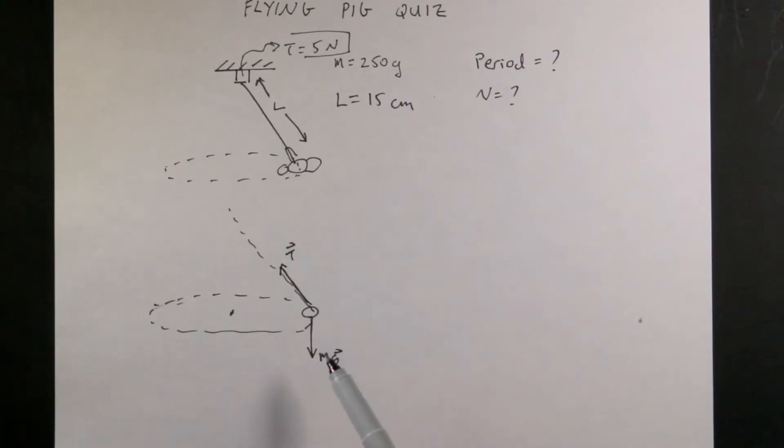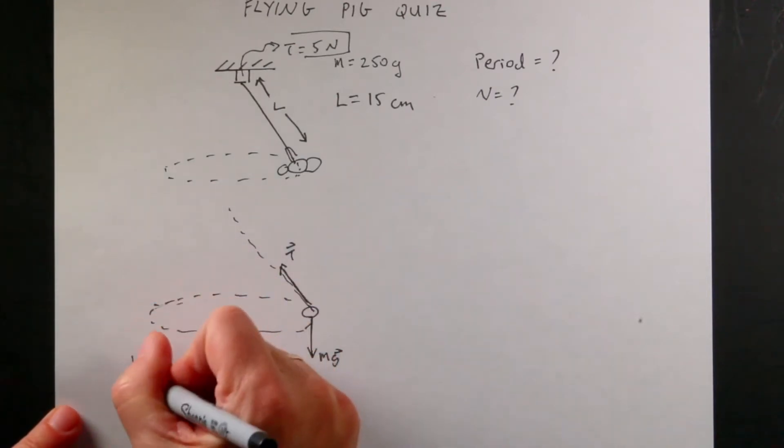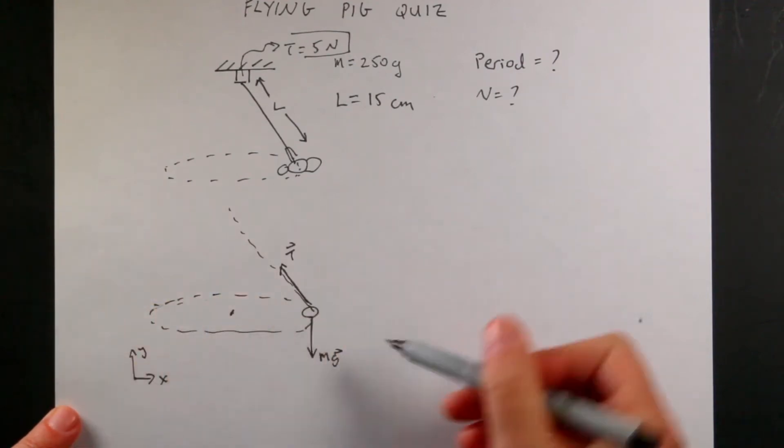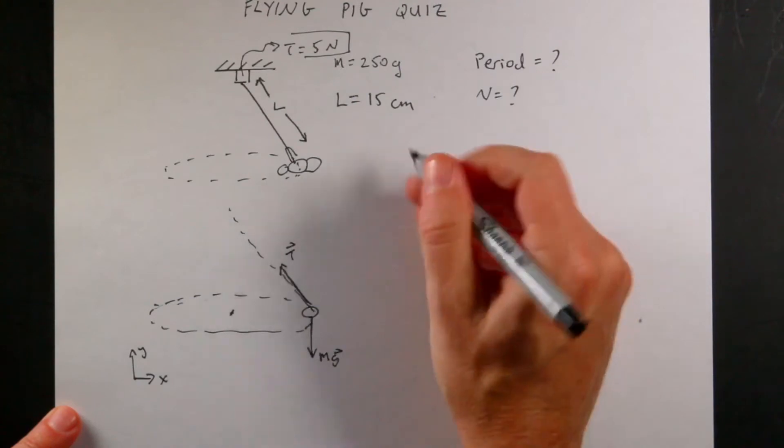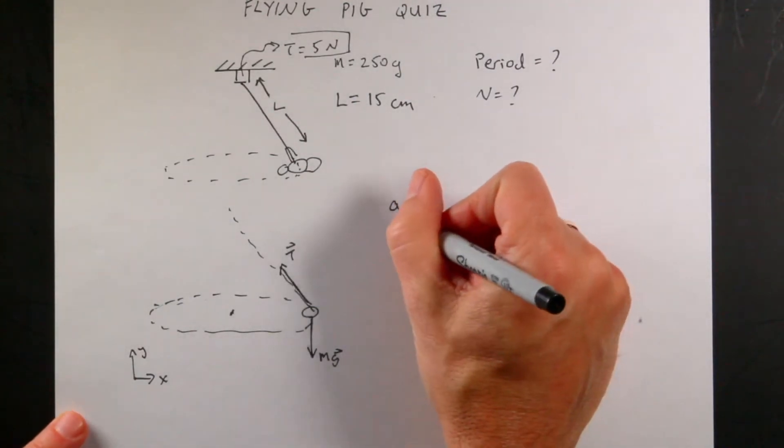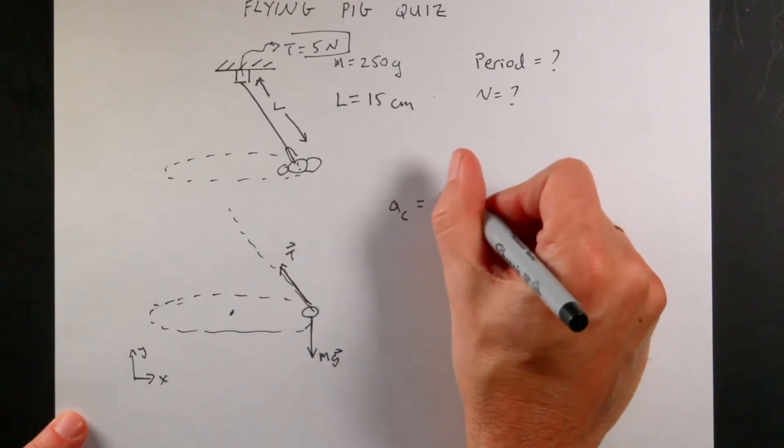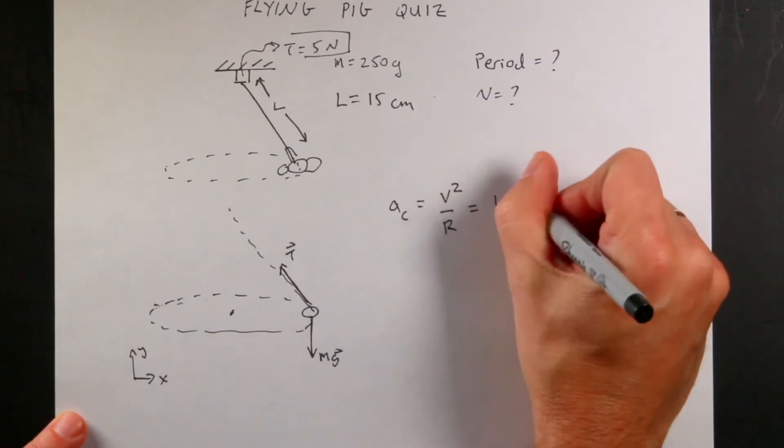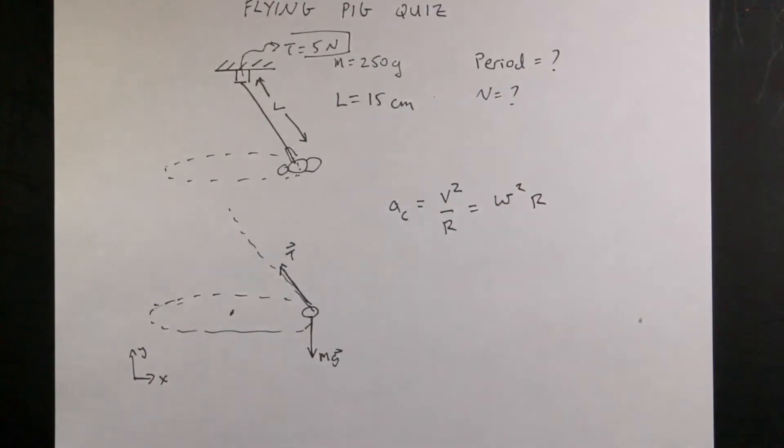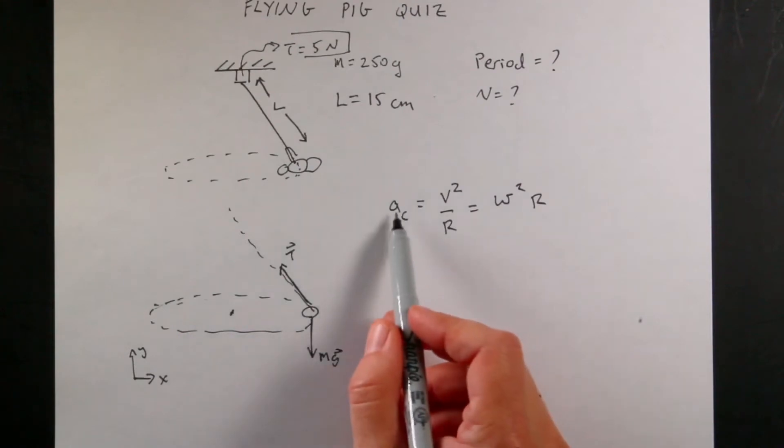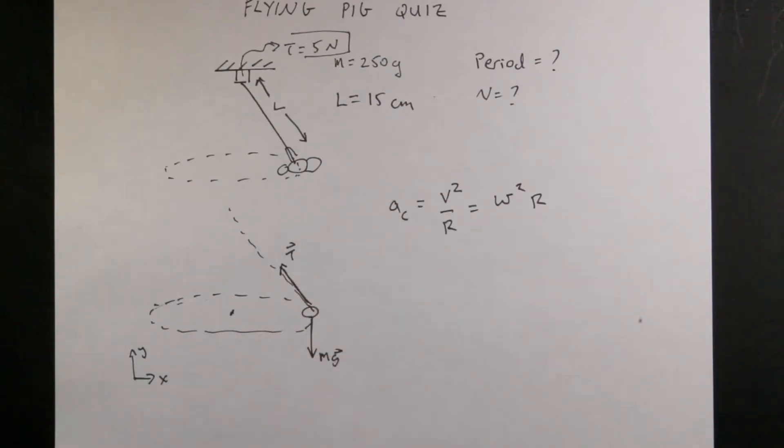And you can see that these forces cannot add up to zero because they're not in opposite direction. So the total force is not zero. And this object is not at rest. And in fact, it's moving in a circle even at a constant speed. That would have an acceleration. So let's call this the xy direction. That's x and that's y. So it's going to be accelerating towards the center of the circle. And remember that if an object's moving in a circle, the acceleration magnitude is going to be equal to the velocity squared over the radius of the circle, which is equal to omega squared times the radius. So it's the same thing.